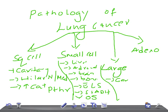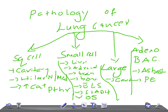Adenocarcinoma is peripherally located. The most important subtype is bronchioalveolar carcinoma. In history and examination, look for exposure to asbestos — typically someone working in an asbestos factory for 25 to 30 years, a very long period. These adenocarcinomas are associated with pleural effusion due to high hyaluronidase activity.